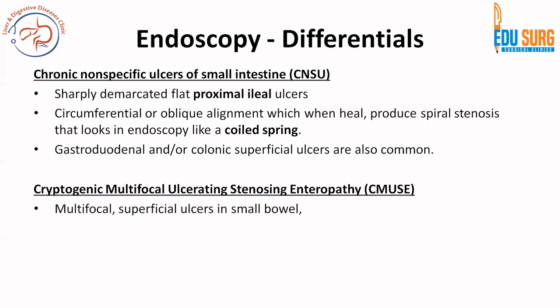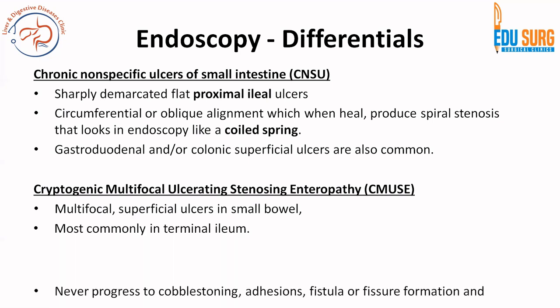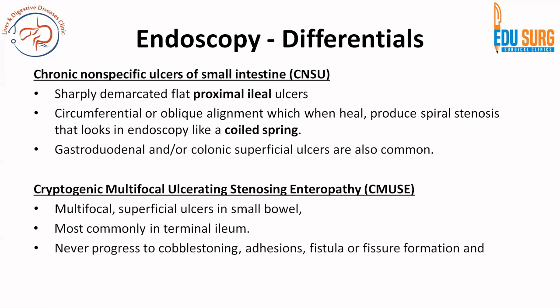CMUSC — chronic multifocal ulcerating stenosing enteropathy — is more common in males. As the name suggests, it has multifocal superficial ulcers most commonly in the terminal ileum. However, these ulcers will never progress to cobblestone appearance, and there are no fistula or fissure formations. The ulcers remain confined to the mucosa and submucosa — that is how you differentiate CMUSC from Crohn's disease.